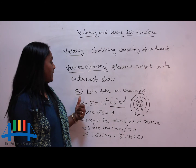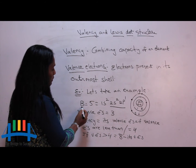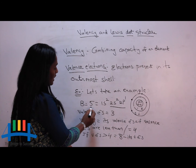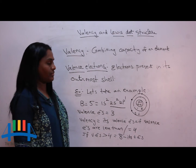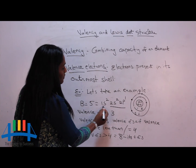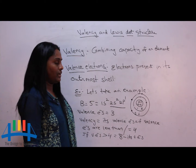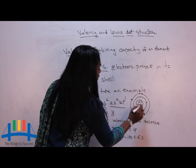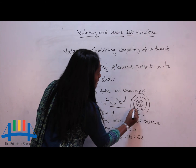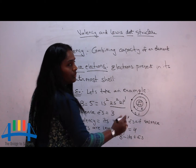What is meant by outermost shell? Let us take one example: boron. Boron is an element with atomic number 5. So if I write its configuration, I get 1s2, 2s2, 2p1. Diagrammatically, 1s2 — here dots represent electrons. According to Bohr's rule,